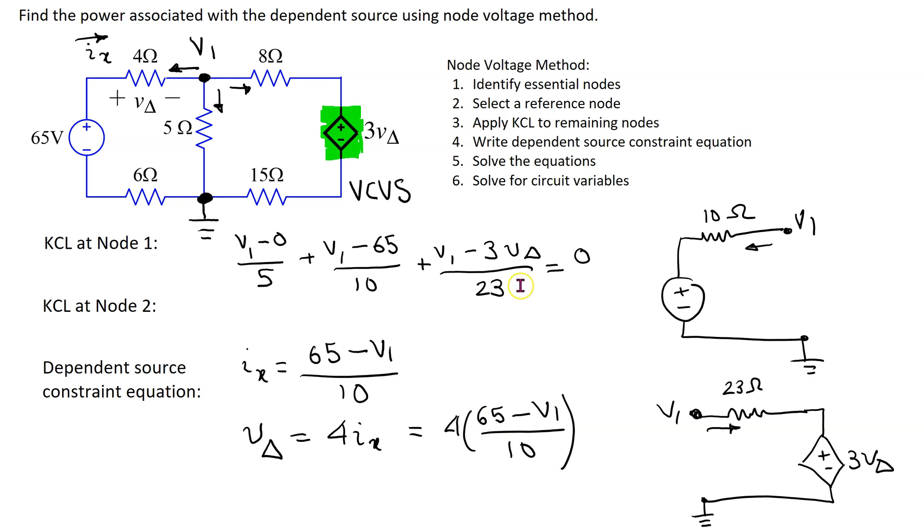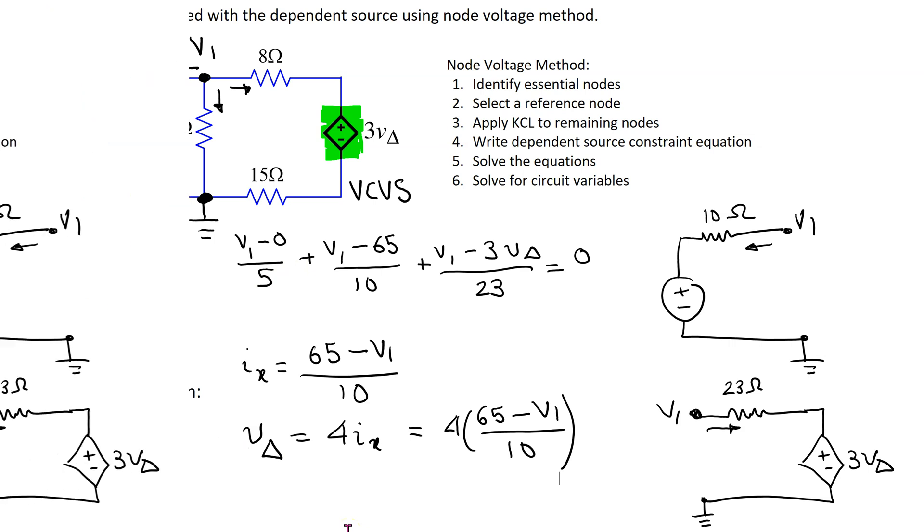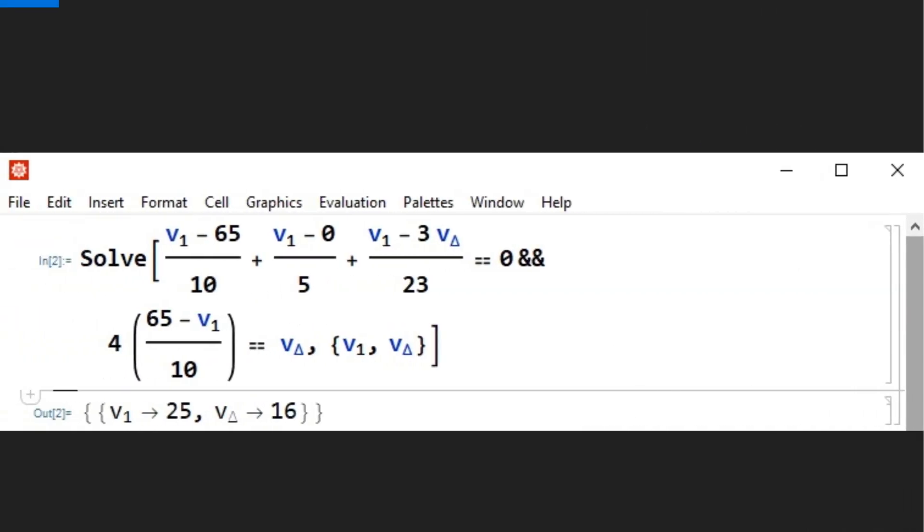Hence, we have two equations with two unknowns V delta and V1 and these can be easily solved. We can use Mathematica to obtain the solution and using the Mathematica solve command the solution can be easily obtained as shown here.